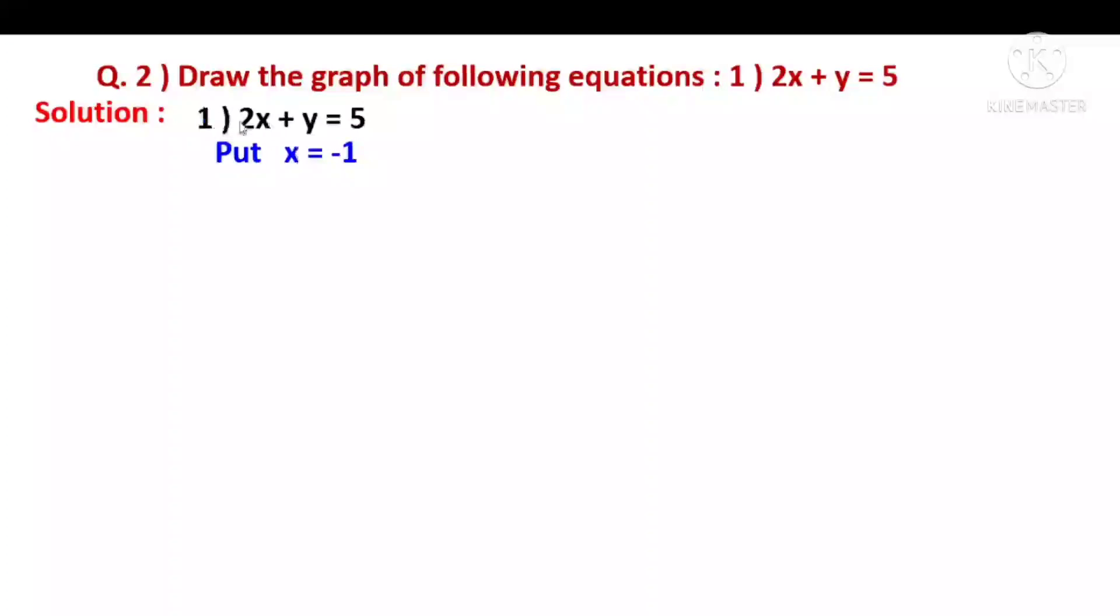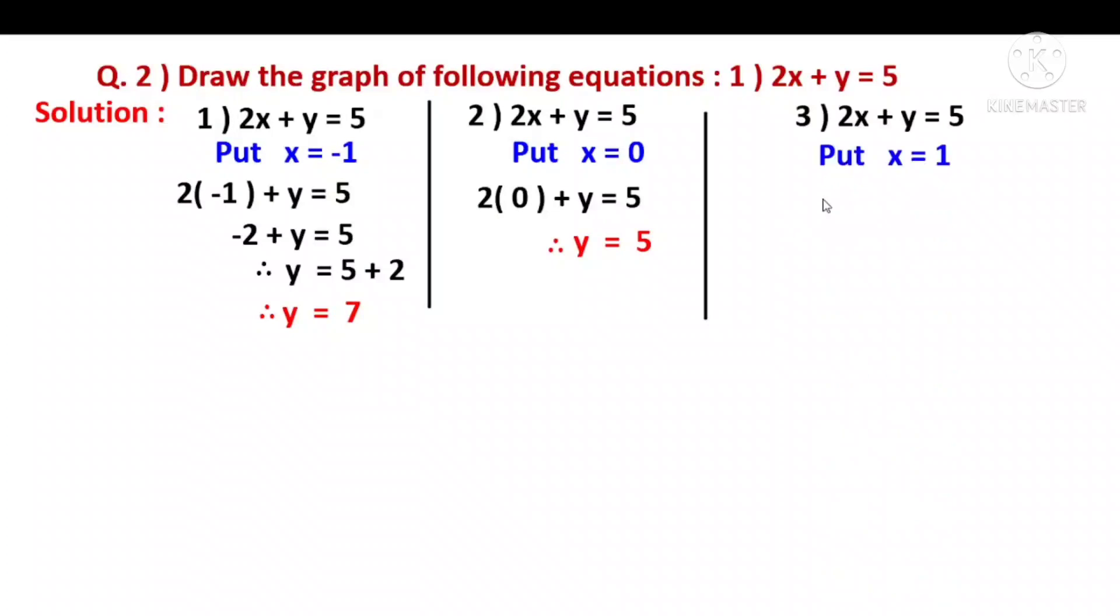2x plus y is equal to 5. Put x is equal to minus 1. 2 into minus 1 plus y is equal to 5. Multiply 2 into minus 1 is minus 2. Minus 2 plus y is equal to 5, therefore y is equal to 7. Put x value as 0. 2 into 0 is 0, so y value is 5. Put x value as 1. 2 into 1 is 2, so 2 plus y is equal to 5, therefore y is equal to 3.